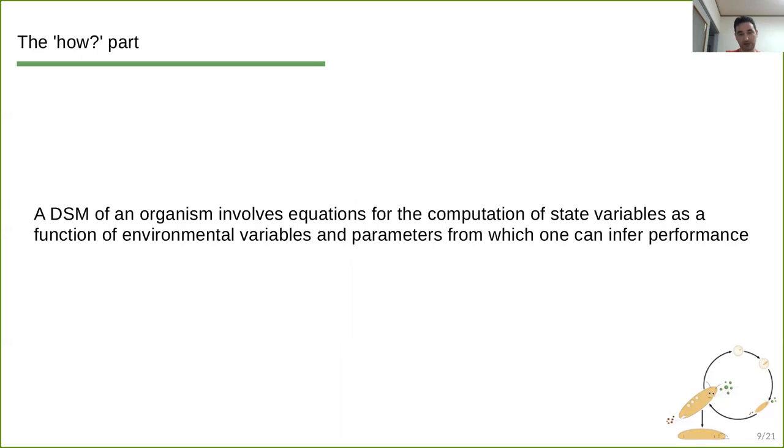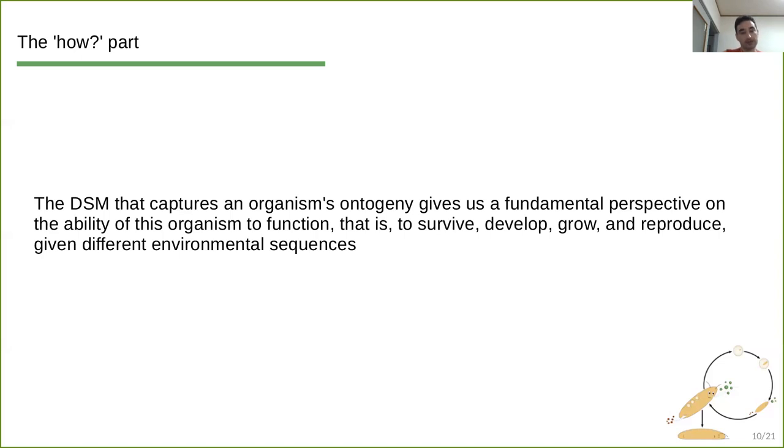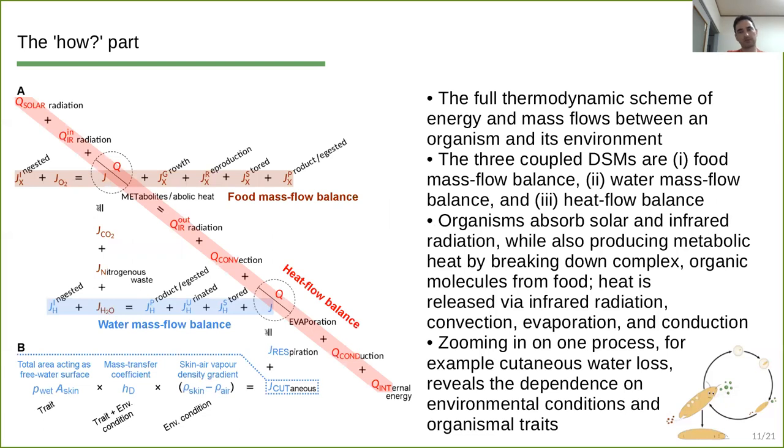And then from that state that we compute and predict, we can infer the organism's performance. And those DSMs that capture an organism's ontogeny give us actually a rather fundamental perspective on whether an organism can function, and that again means survive, develop, grow and reproduce in a given environment, so given the different environmental time series or sequences of data that describe this environment. So to make this more concrete, this dynamical systems models approach, we have the full thermodynamic scheme of energy and mass flows between an organism and its environment. So the full scheme means that there are three coupled dynamical systems models, one for food mass flow balance, for water mass flow balance, and for heat flow balance.